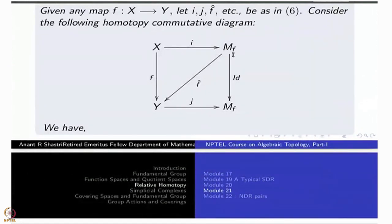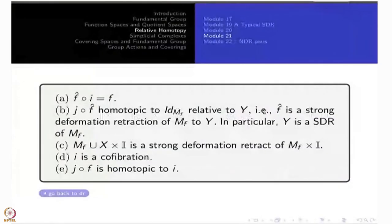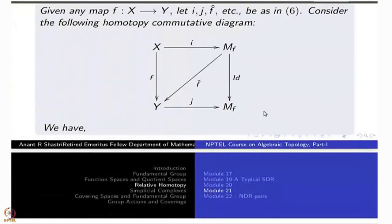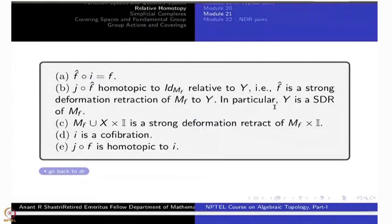When you put in the identity arrow, if you don't include it the diagram is commutative; if you do, whatever results will be homotopy commutative. J composite F is homotopic to the inclusion map I — this is precisely the last thing stated. So let us prove these one by one; some of them are completely obvious.